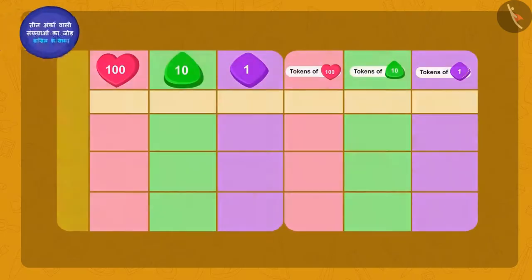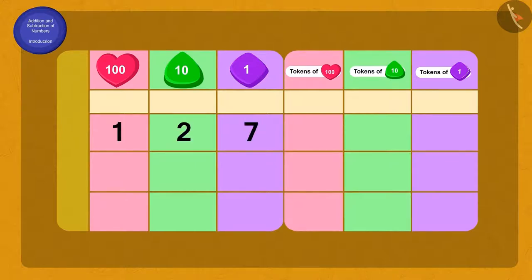Appu was sad and now he was wondering how many sheep he is left with. Can you again help Appu calculate? To find out the total number of sheep lost, we will add the number of sheep went missing the first time to the number of sheep missing the second time, that is 135 and 127.